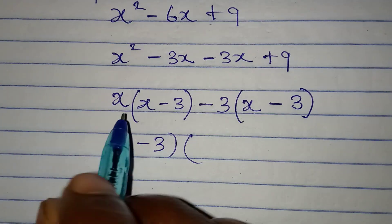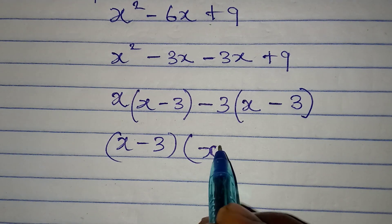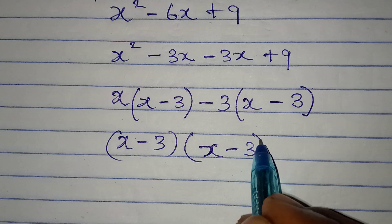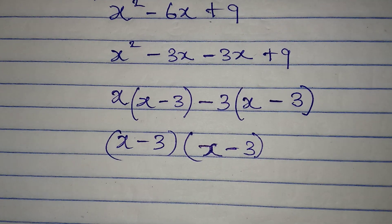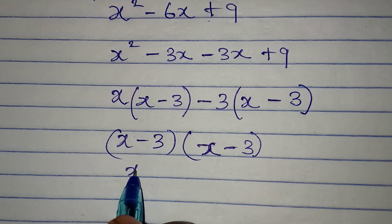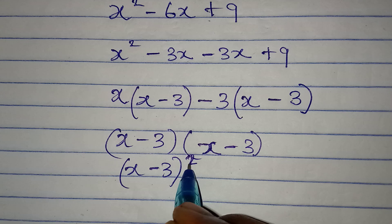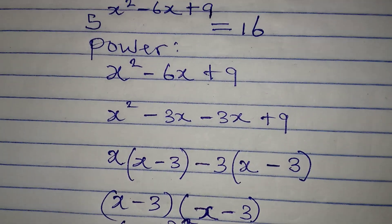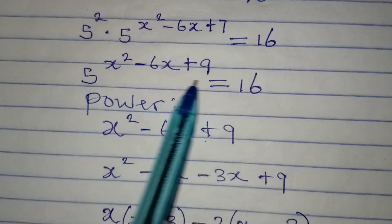In the other bracket we also have x minus 3, so this has been fully factorized. In other words, x squared minus 6x plus 9 is the same thing as x minus 3, all squared. Now let's go back to the original equation.